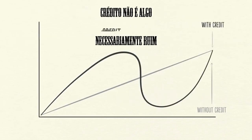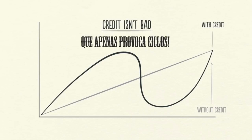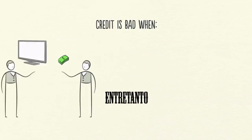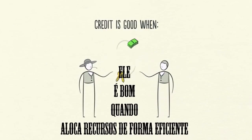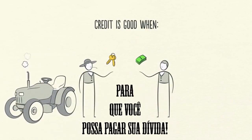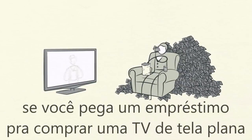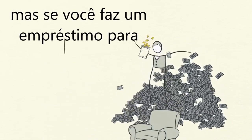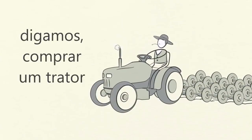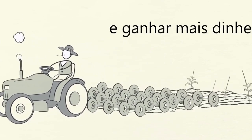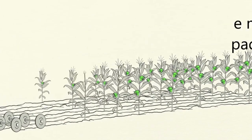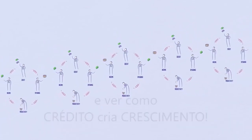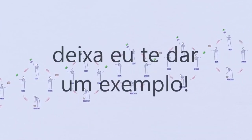Credit isn't necessarily something bad that just causes cycles. It's bad when it finances overconsumption that can't be paid back. However, it's good when it efficiently allocates resources and produces income so you can pay back the debt. For example, if you borrow money to buy a big TV, it doesn't generate income for you to pay back the debt. But if you borrow money to buy a tractor, and that tractor lets you harvest more crops and earn more money, then you can pay back your debt and improve your living standards.